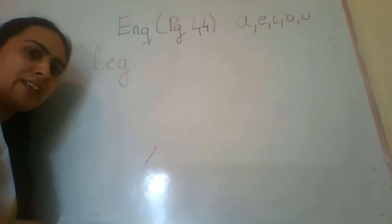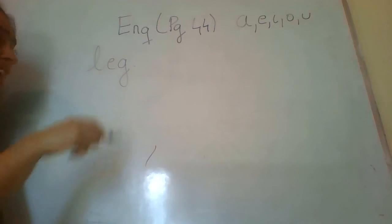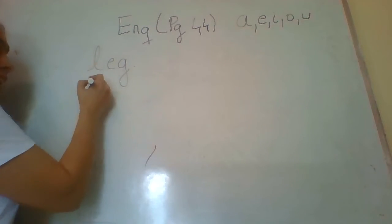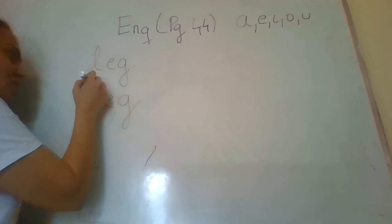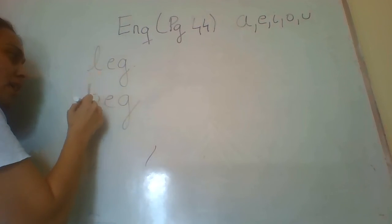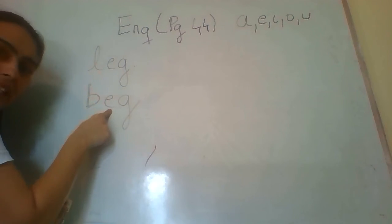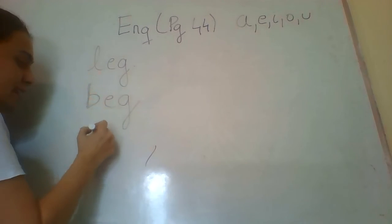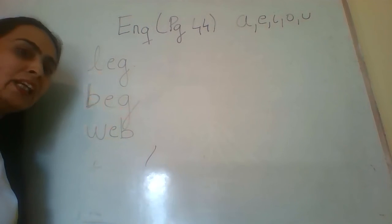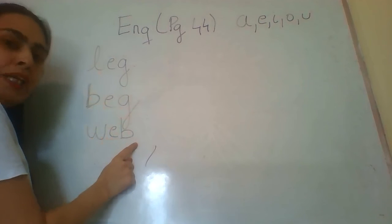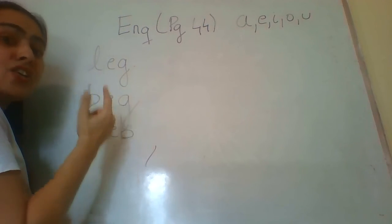Which has E in it. So let's write: B-E-G. What is B-E-G? B-E-G is 'beg'. Can you see we have the vowel E in it. Next we have one more word — W-E-B. W-E-B is 'web'.